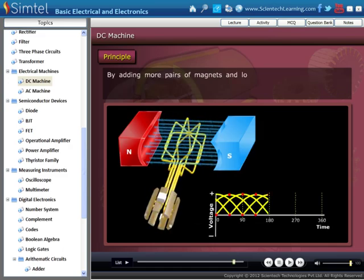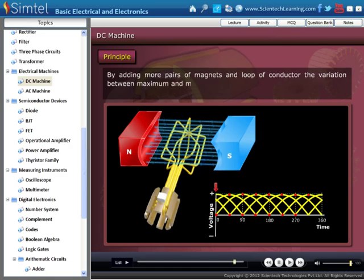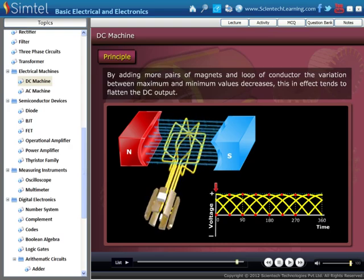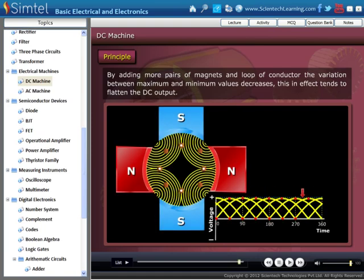By adding more pairs of magnets and loop of conductor, the variation between maximum and minimum values decreases. This in effect tends to flatten the DC output. A practical DC machine armature has many loops wound on a rotor. The field is composed of many electromagnets. This tends to produce a pure DC output.